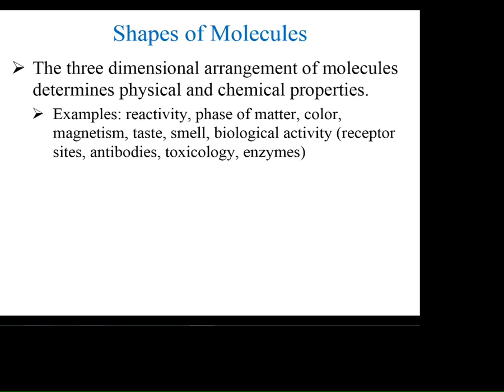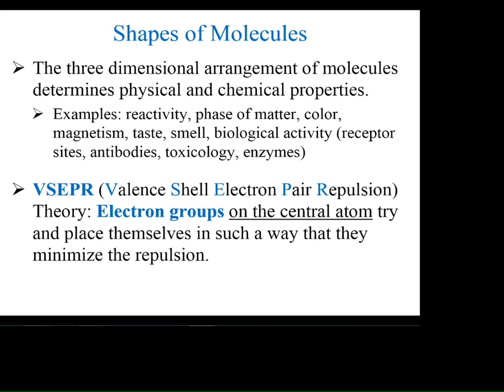The way we try to figure out the shape of the molecule is we use VSEPR theory — Valence Shell Electron Pair Repulsion theory. It's a big, scary, long-sounding term, but it's really not that bad. Basically it says we're going to look at the valence shell electron pairs, which is exactly what we just did for the Lewis structure section.